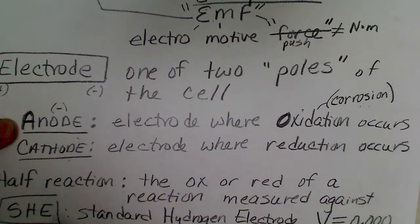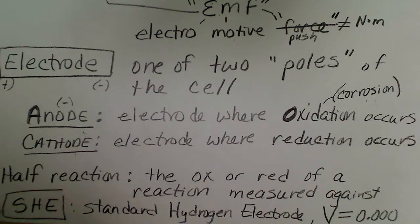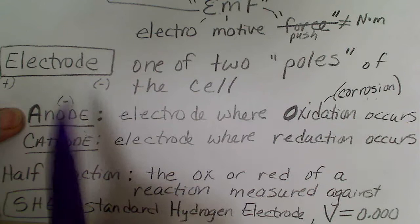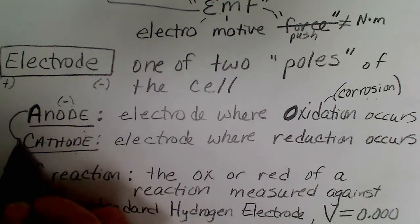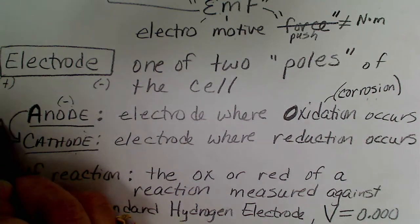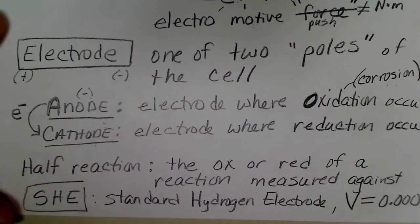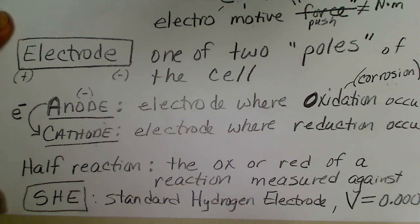That'll help us remember which direction the electrons flow. Since electrons are negative, they'll flow away from the anode toward the cathode. So that will be something that we'll be looking at later.